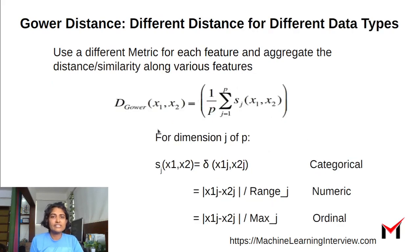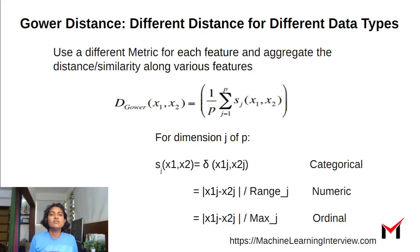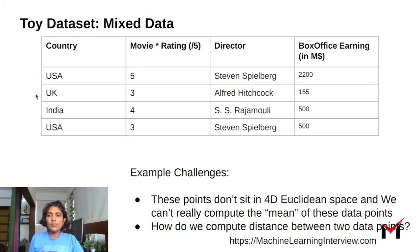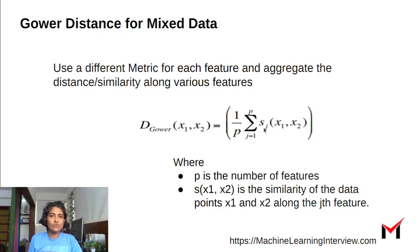Specifically, the way Gower distance works: how do you compute this feature-wise distance? Given two data points X1 and X2, look at feature J. If J is a categorical feature, the distance S_J(X1, X2) is zero if the values are the same and one otherwise. For example, for points 1 and 2, the country feature is different, so the distance is one. For points 1 and 4, both are USA, so the distance for the country feature is zero.